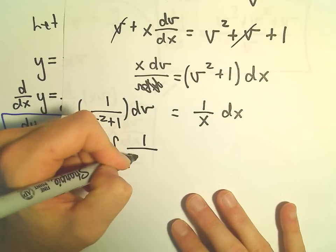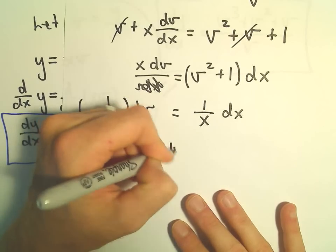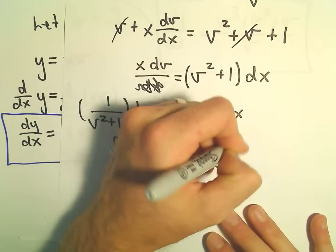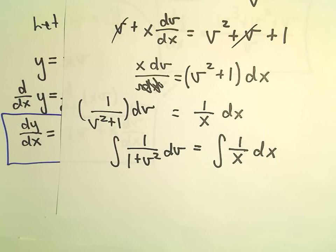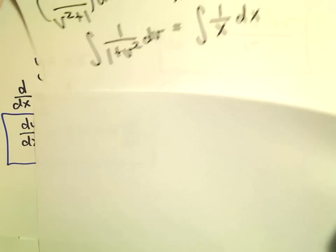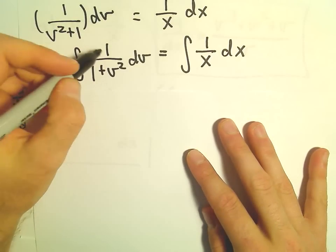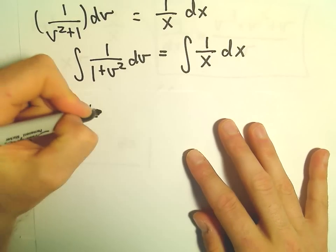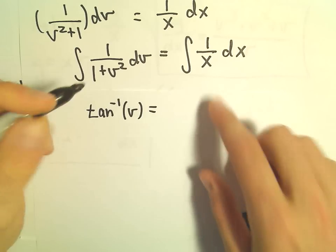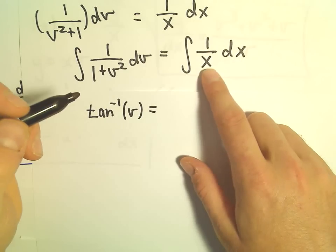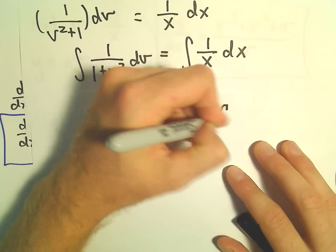The integral of 1 over (1 + v²) dv equals the anti-derivative of 1/x dx. The anti-derivative of 1/(1 + v²) is arctan(v). The anti-derivative of 1/x is the natural logarithm of |x| plus C.